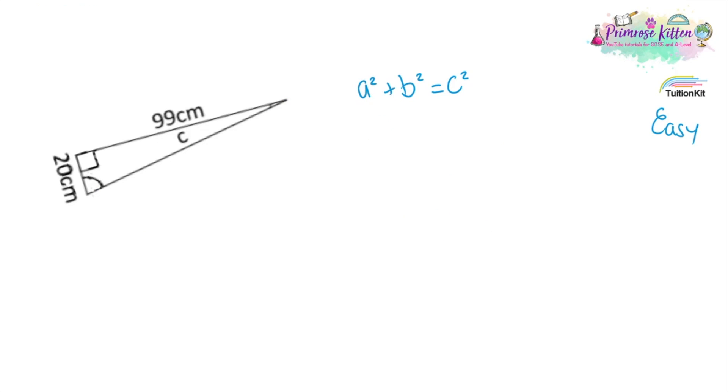Same equation again. A squared, 99 squared plus B squared, 20 squared equals C squared. 99 squared is 9,801 plus 20 squared, 400. Adding those together will give us 10,201. Square root of 10,201 to give us a length of C gives us an answer of 101.